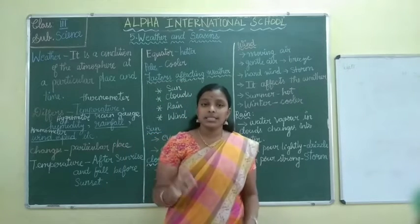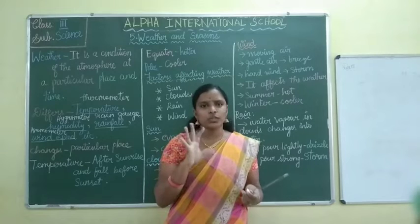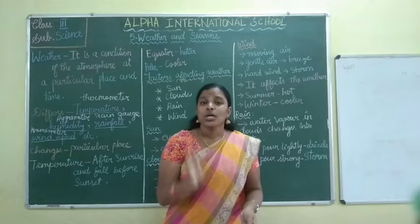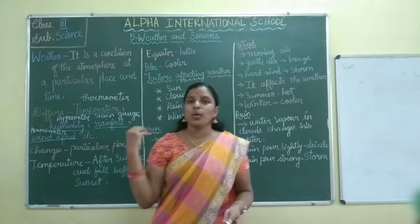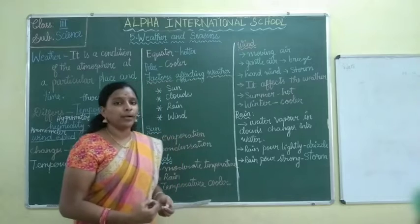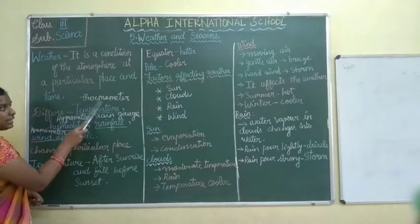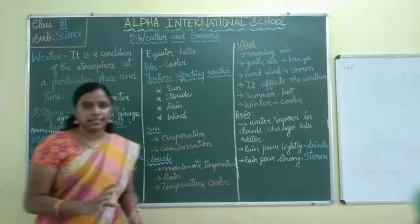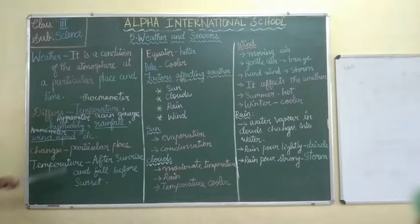Temperature is measured with the thermometer. Why thermometer? We normally use it when we are sick — we keep it in our mouth. But here they are using a thermometer to measure the land and sea surface. Then the hydrometer is used for humidity. The hydrometer measures humidity.